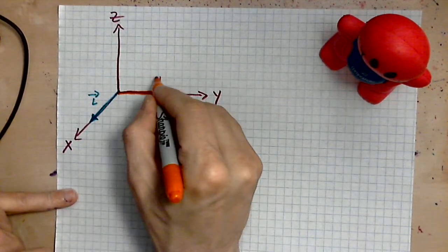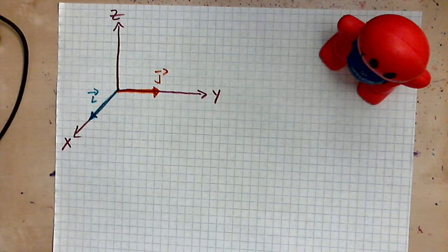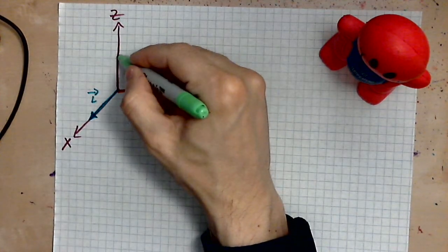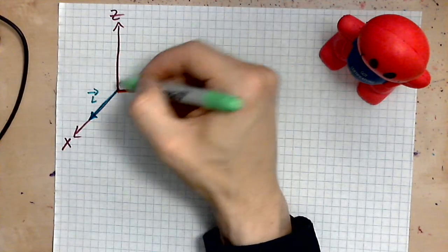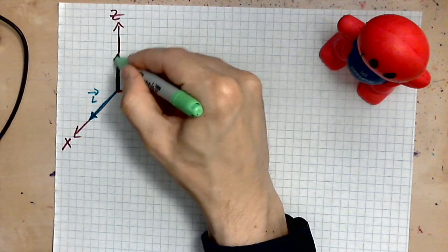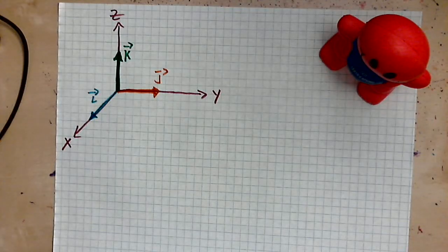And that one is J. And then along the last axis, or the z-axis, we have a third unit vector whose length is also again 1. And this is what we call the vector K. So you have three vectors I, J, and K.